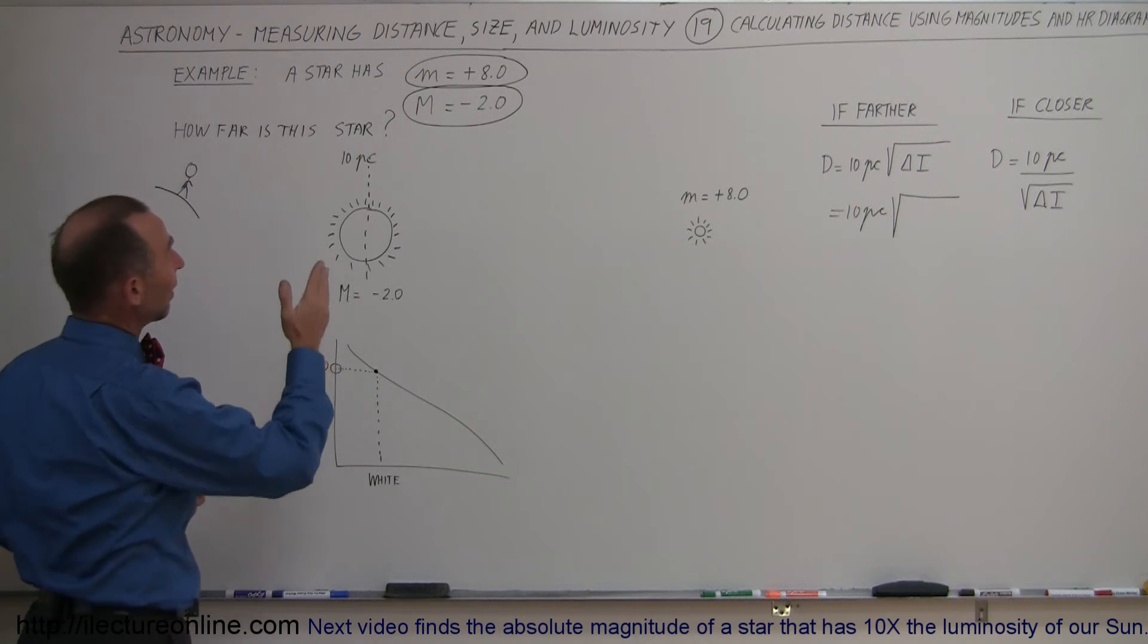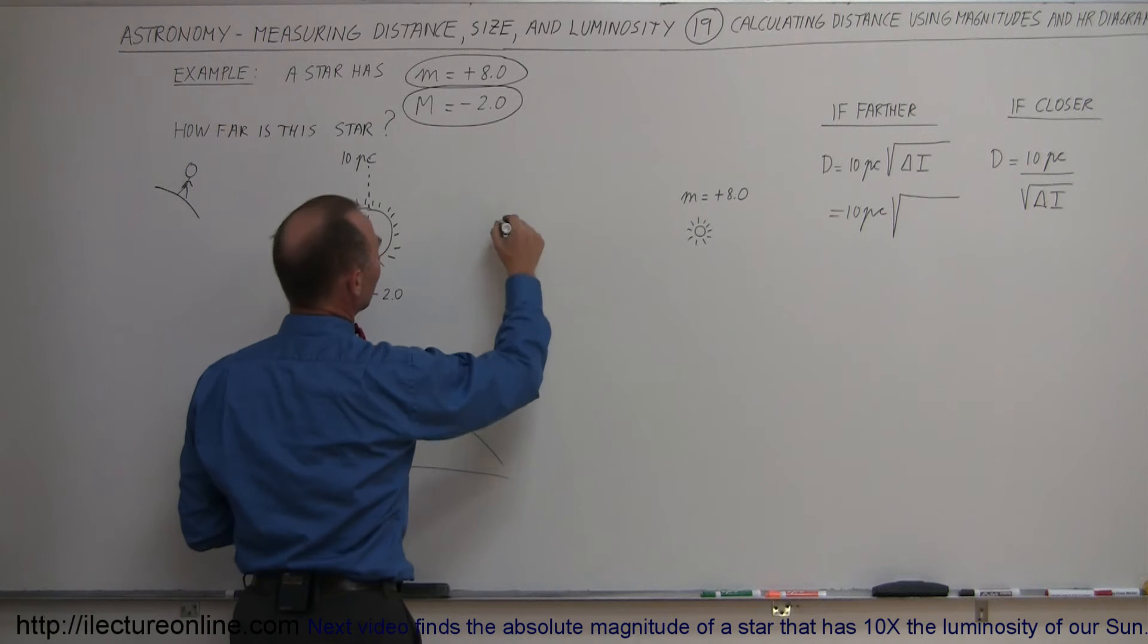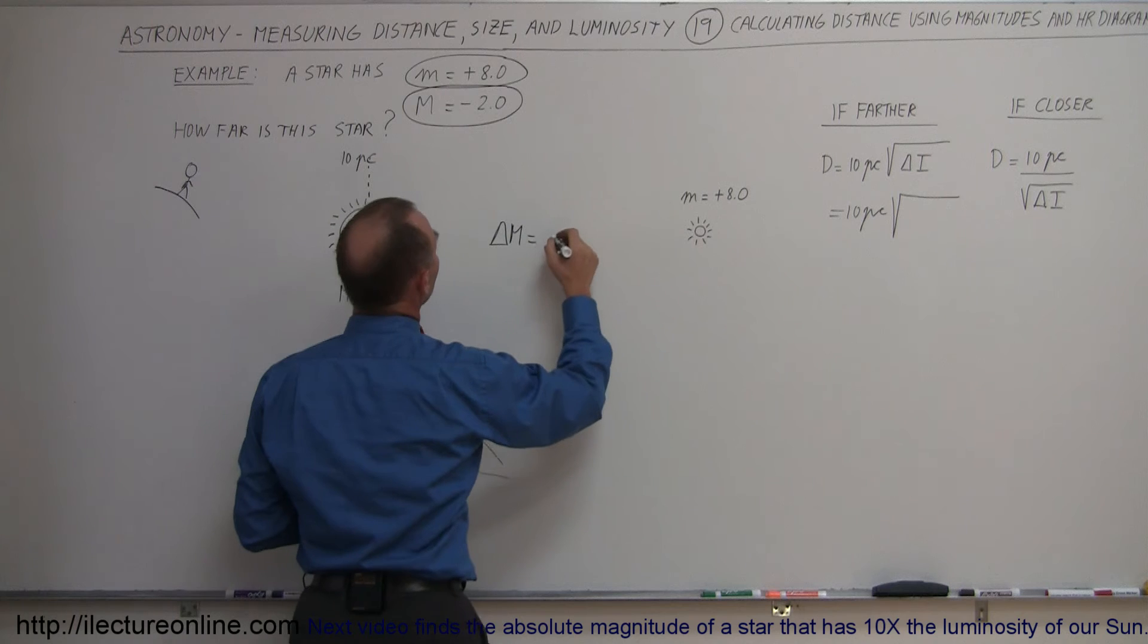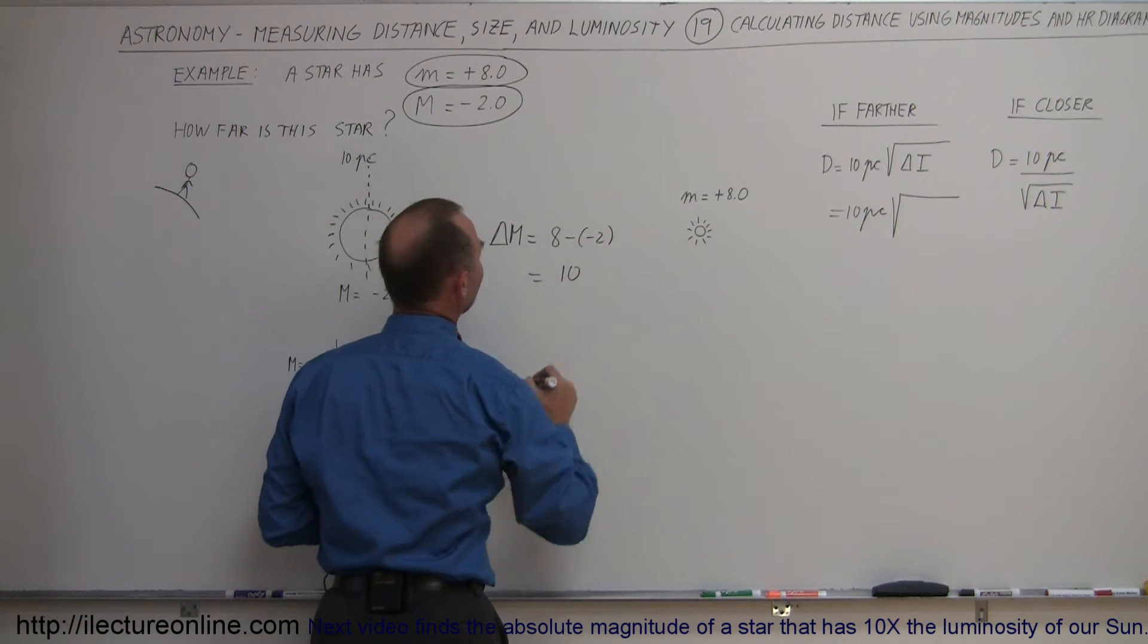Well, first of all, we want to find the difference in the magnitudes. So the difference in the magnitudes, delta M, is equal to 8 minus a minus 2 is equal to 10. So the difference in magnitudes between the absolute and the apparent is 10 magnitudes.